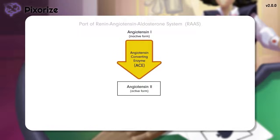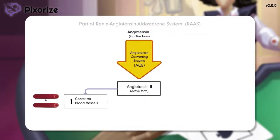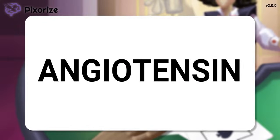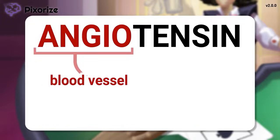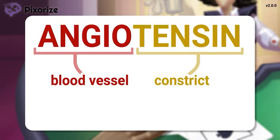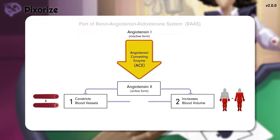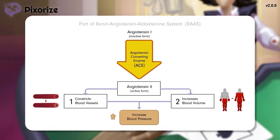You just have to know that active angiotensin-2 has two major roles in the body: one, it acts to constrict blood vessels, and two, it stimulates other hormones in the RAS to increase blood volume. The word angiotensin itself gives this away — angio means blood vessel, and tensin means to tense or constrict, making it easy to see how angiotensin-2 causes vasoconstriction. The end result of constricting blood vessels and increasing blood volume is an increase in blood pressure.